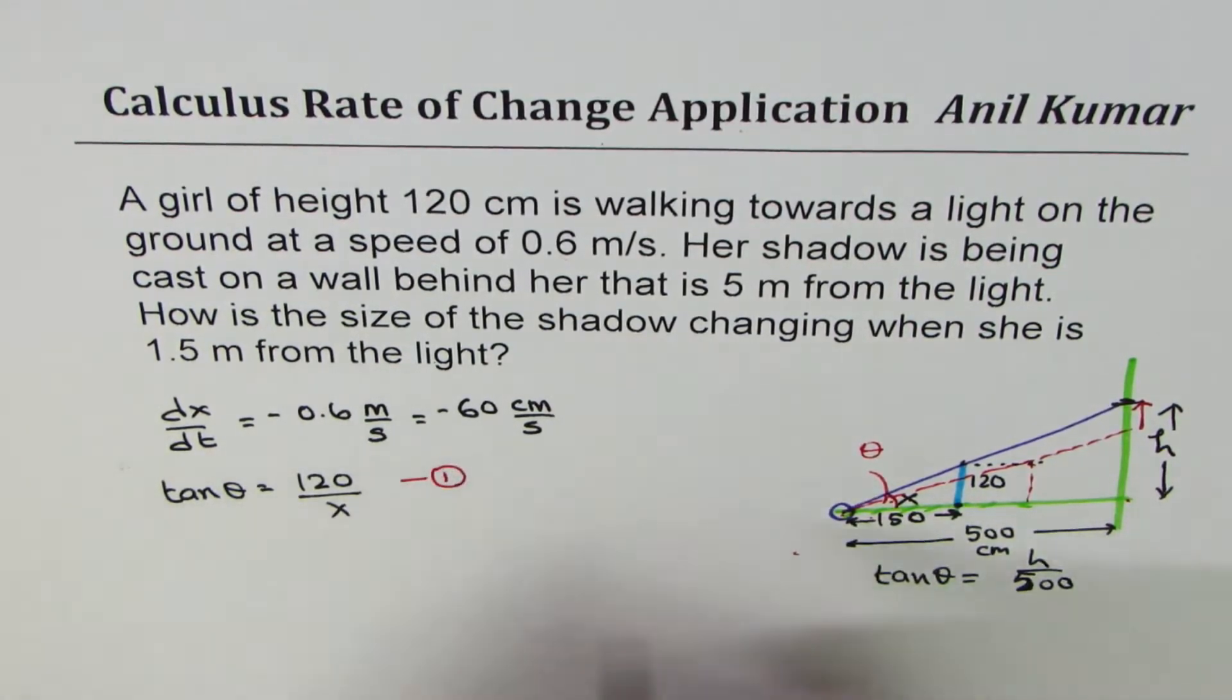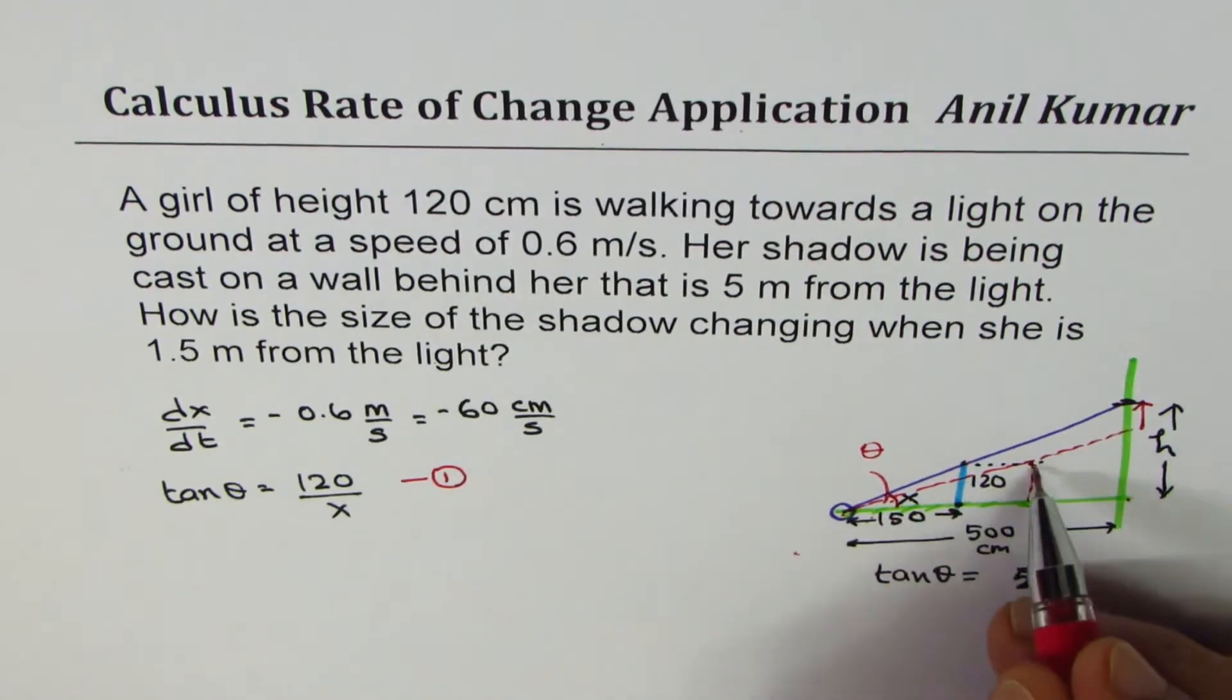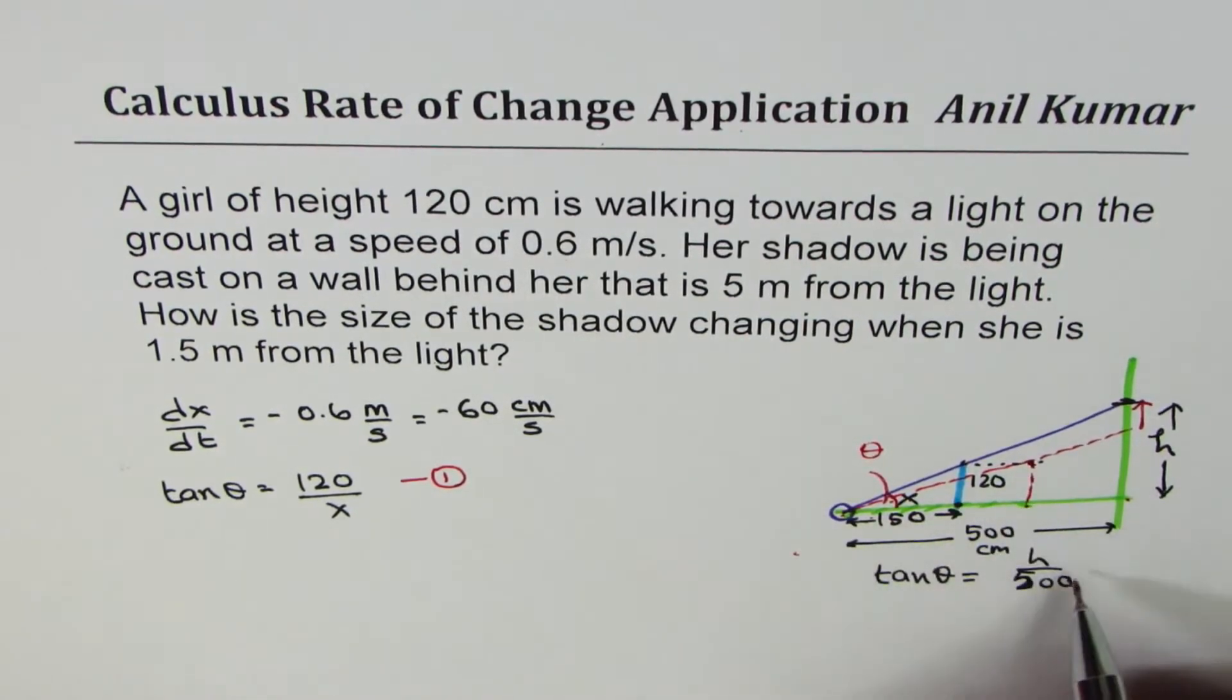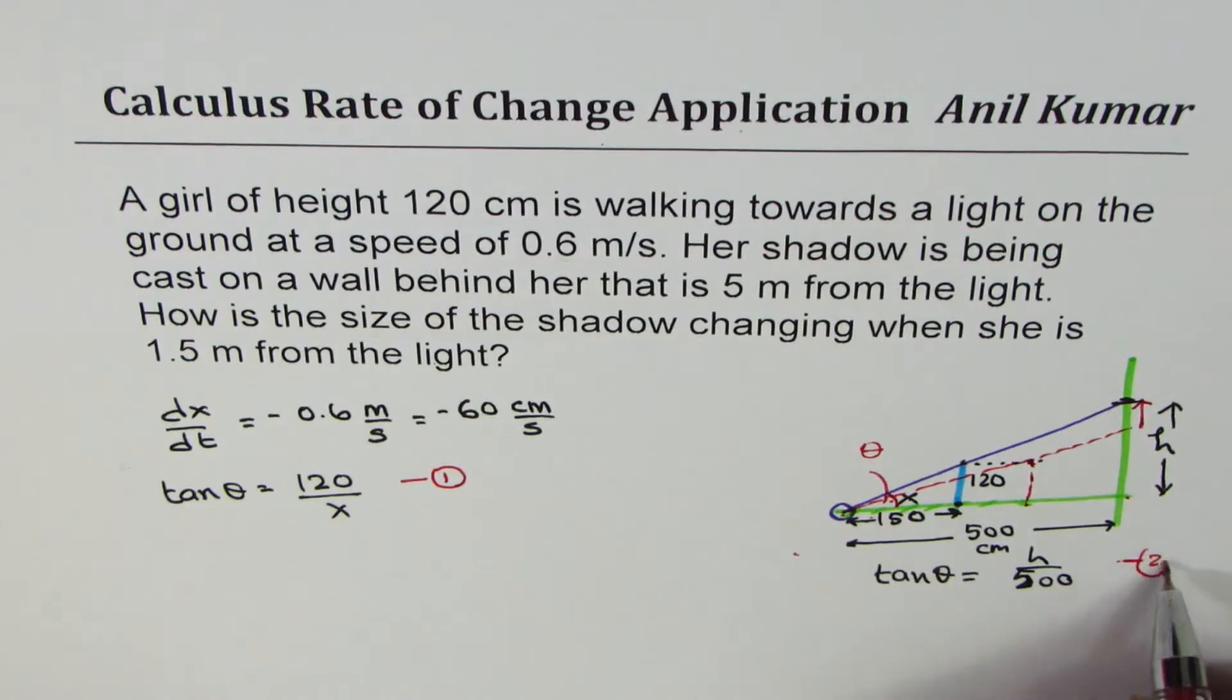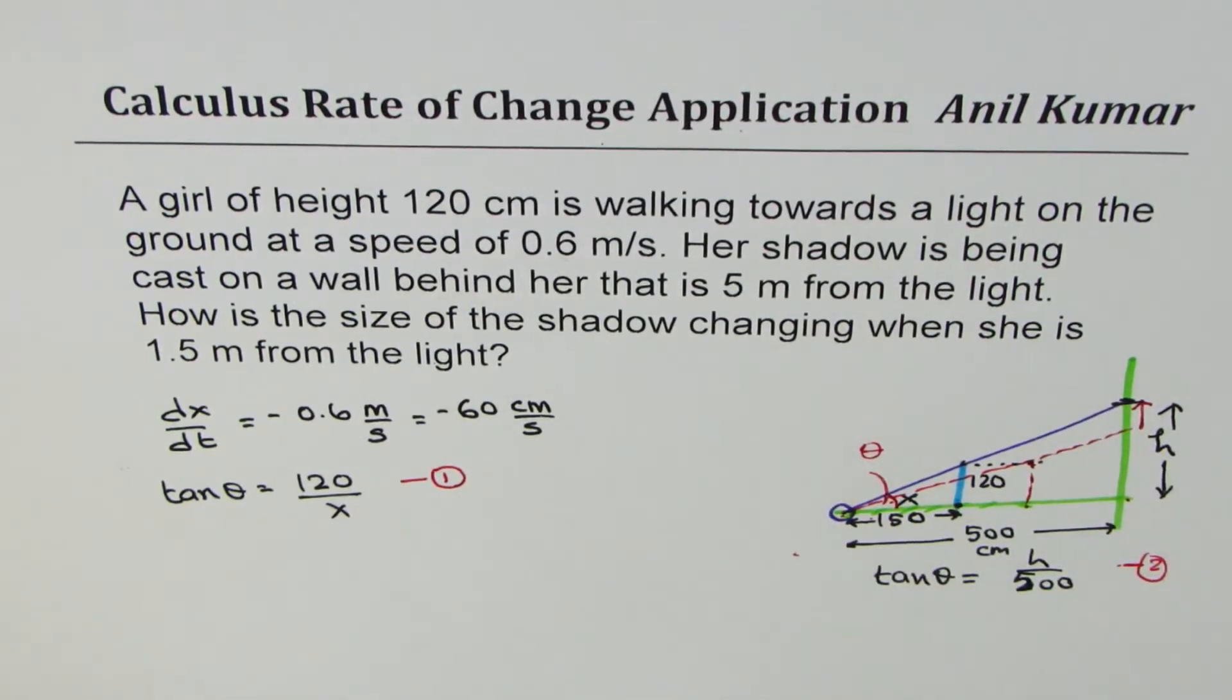One is the same angle, but we are checking with the height of the girl. The other, same angle, but shadow on the wall. You get the point. So if I take the derivative of these functions, what do I get? Derivative of tan theta secant square theta.